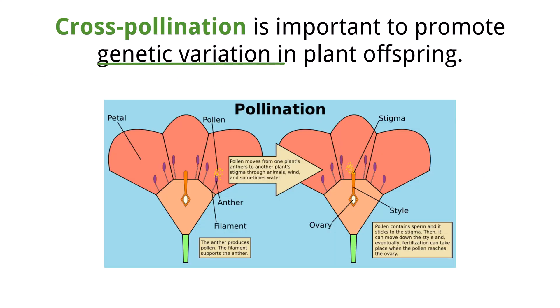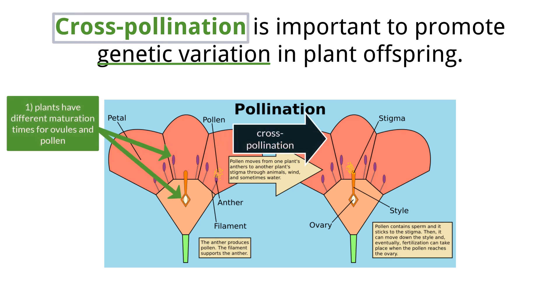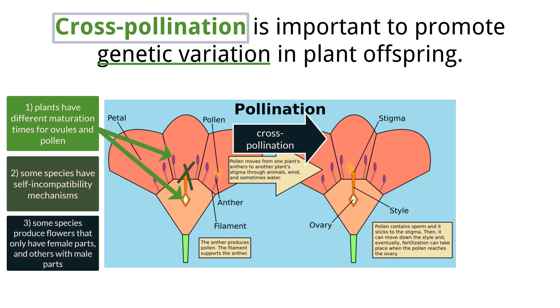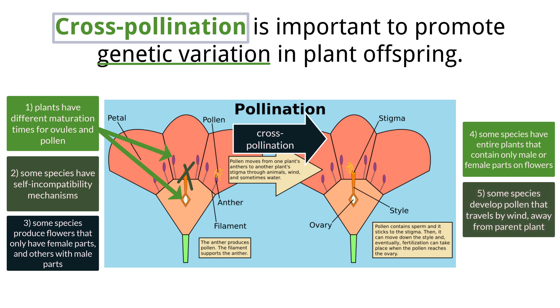It is beneficial in plants to have variability, just as it is in animals. While many plants have both male and female reproductive structures, there are mechanisms that have evolved to promote cross-pollination. These include: first, plants having different maturation times for ovules and pollen of the same flower, ensuring self-pollination cannot occur; second, some species have self-incompatibility mechanisms where the stigma and pollen may use chemicals that would not allow pollen tubes to grow; third, some species produce flowers that only have the female parts while others only have the male parts; fourth, some species produce an entire plant that is either male or female; and fifth, some species produce pollen that is only transferred by wind, which carries the pollen away from the parent plant.